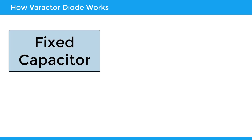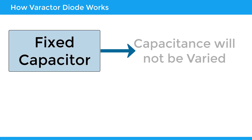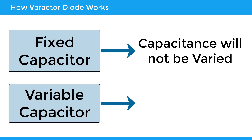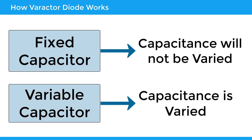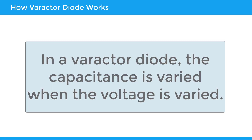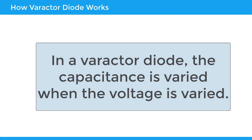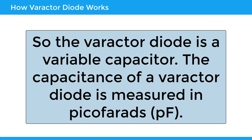In a fixed capacitor, the capacitance will not be varied. Whereas, in a variable capacitor, the capacitance is varied. In a varactor diode, the capacitance is varied when the voltage is varied. So, the varactor diode is a variable capacitor. The capacitance of a varactor diode is measured in picofarads.